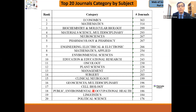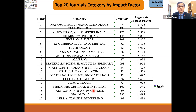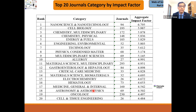Looking at the top 20 journals by impact factor — by subject category — nanoscience and nanotechnology comes at the top with an aggregate impact factor of 6.79, followed by cell biology at 5.9, then multidisciplinary chemistry, and so on. Again, this is by subject area, not by individual journal. This data is from the Journal Citation Reports, accessible only if you have access through your institution.